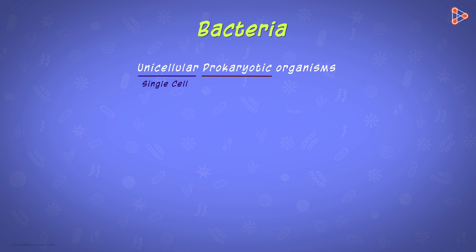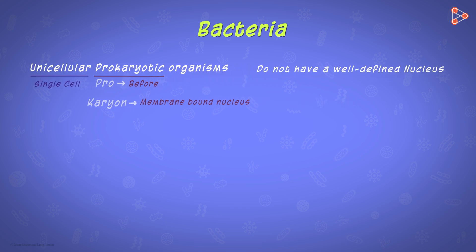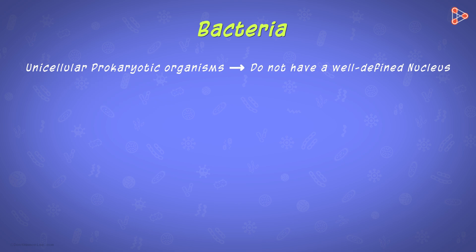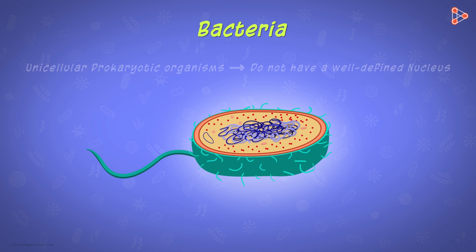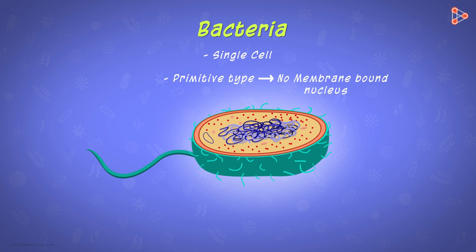And what do we mean by prokaryotic? The word arises from two Greek terms. The term 'pro' means before, referring to a primitive form, whereas the term 'karyon' means kernel or nut — and here it refers to a membrane-bound nucleus. So prokaryotic organisms are those which do not have a proper well-defined nucleus. In these organisms, the genetic material is randomly scattered in the cytoplasm. So when we say that bacteria are unicellular prokaryotes, it means they have a single cell of a primitive type without a well-defined nucleus.